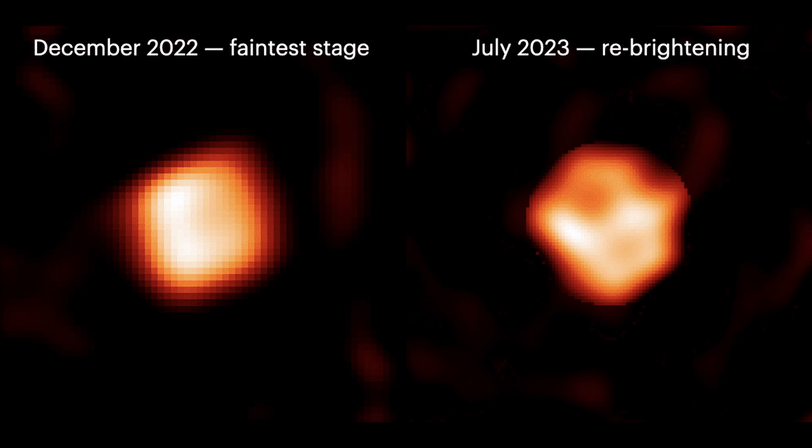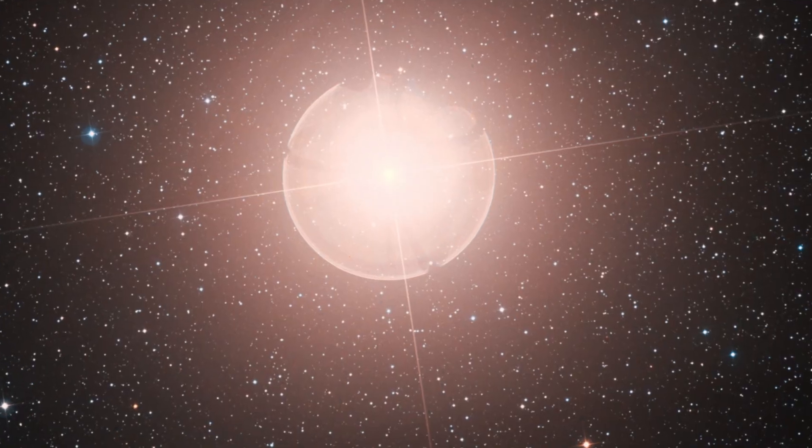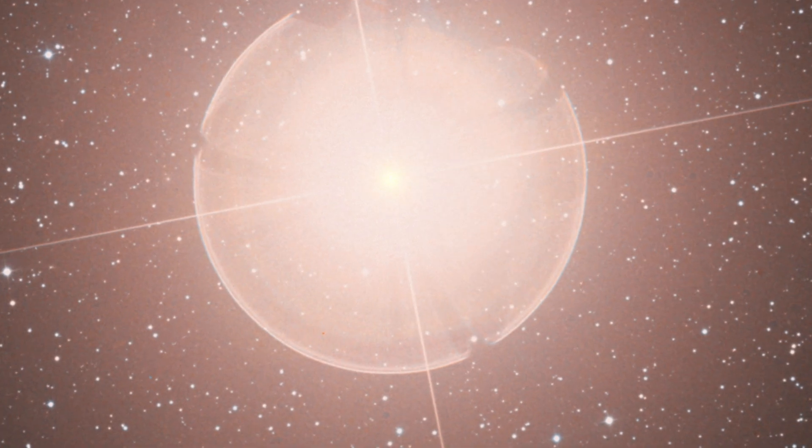However, RW Cephei seems to experience multiple grand eruptions during this transition stage, a common occurrence for red giants. While RW Cephei is undergoing more of these events, Betelgeuse might be at the beginning of such occurrences, hinting that it might go supernova sooner than RW Cephei.